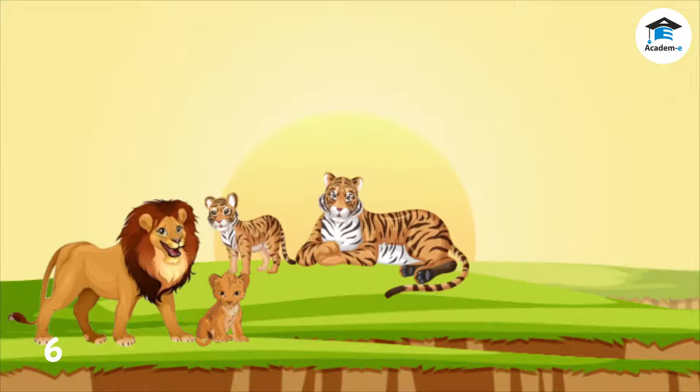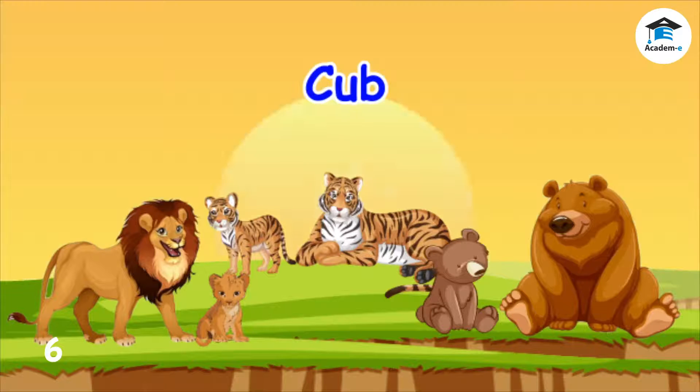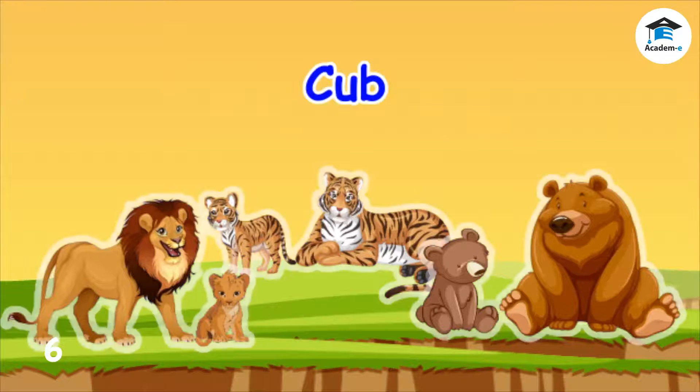The young of a lion, a tiger, and a bear are called cub. These cubs and their parents also have the same body parts and body coverings.